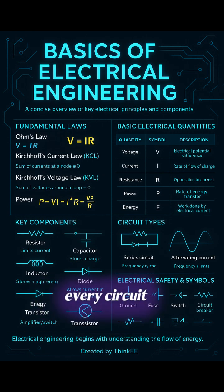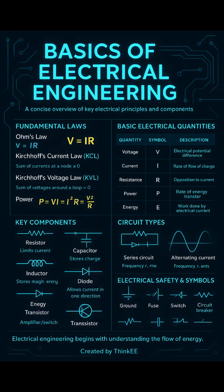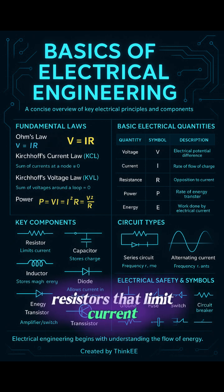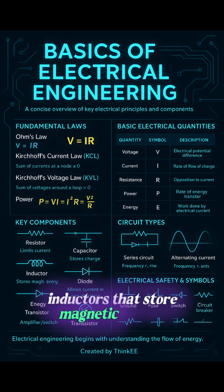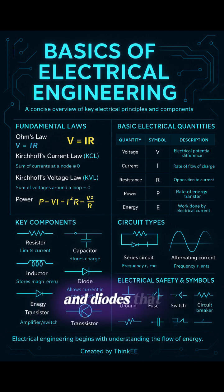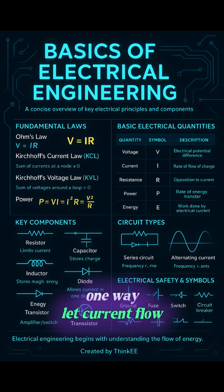Every circuit is built from core components: resistors that limit current, capacitors that store charge, inductors that store magnetic energy, and diodes that let current flow one way.